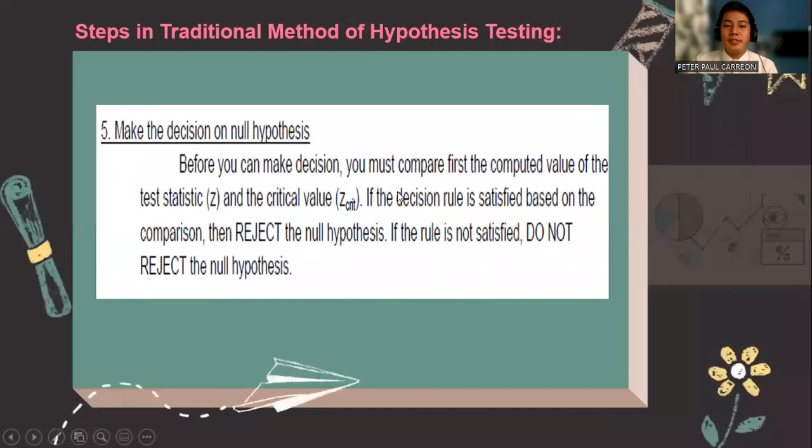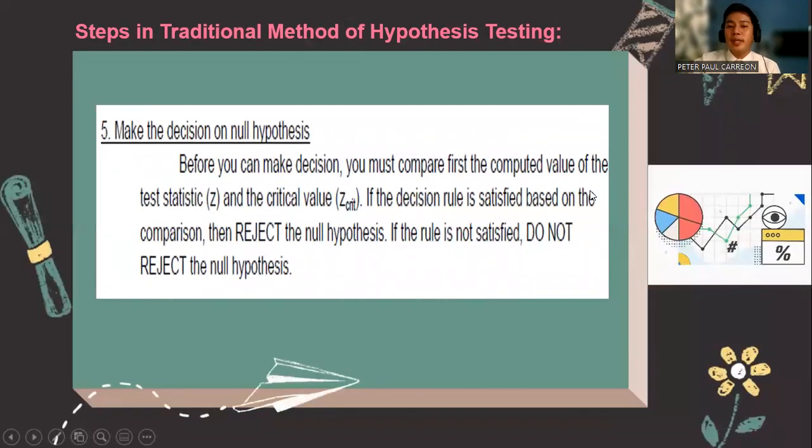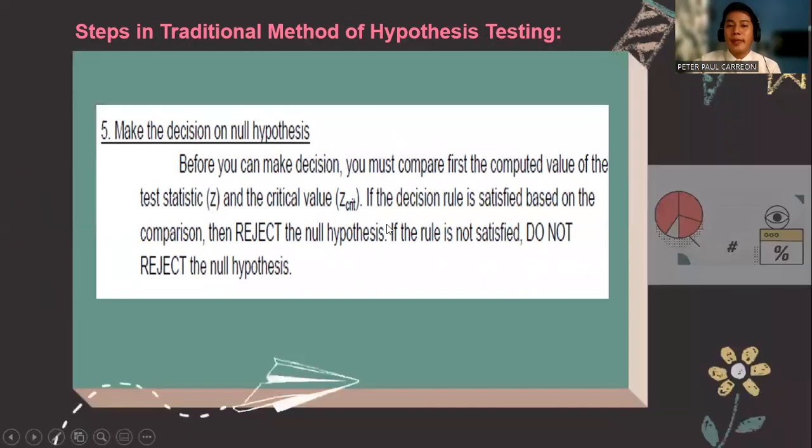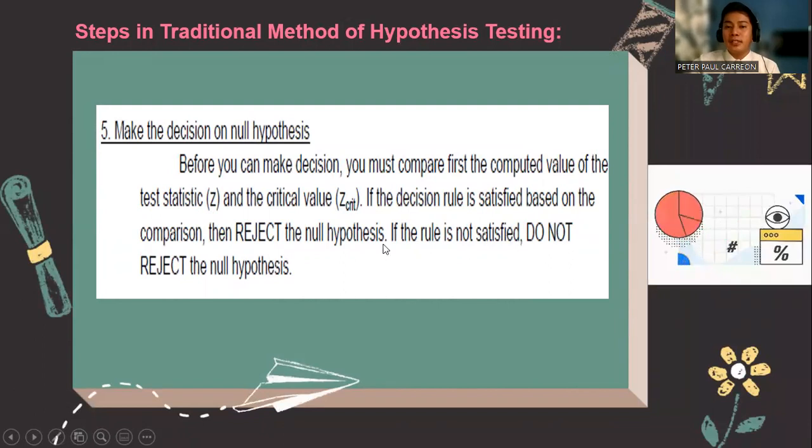Number five, before you make a decision, you must compare the computed value of the test statistic and the critical value. If the decision rule is satisfied, therefore the inequality is true, you reject the null hypothesis. But if the inequality is false and the rule is not satisfied, then you reject the null hypothesis.